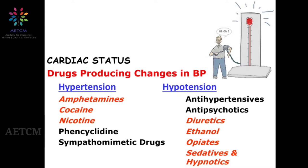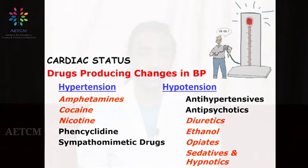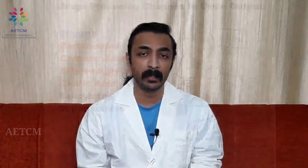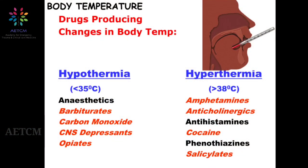The urine output is also an important cardiovascular parameter. Decreased urine output or oliguria is associated with barbiturates, carbolic acids, ethylene glycol, oxalic acid, salicylates, and sulfonamides. For body temperature, hypothermia is caused by CNS depressants, opiates, carbon monoxide, barbiturates, and anesthetic agents. Hyperthermia can be caused by cocaine, salicylate, phenothiazines, amphetamines, and anticholinergics.